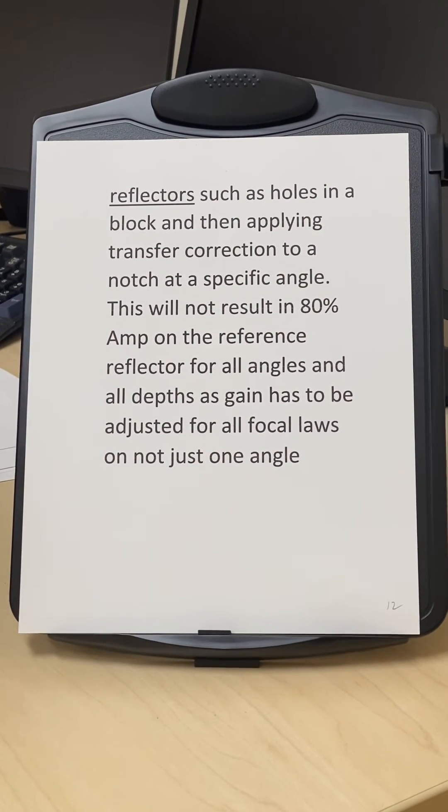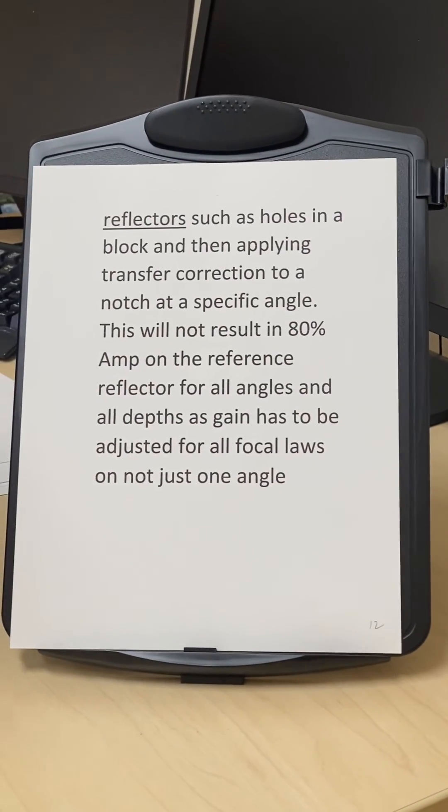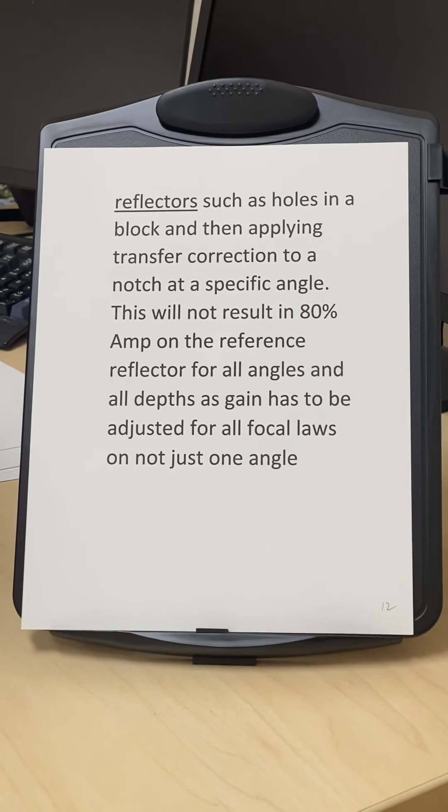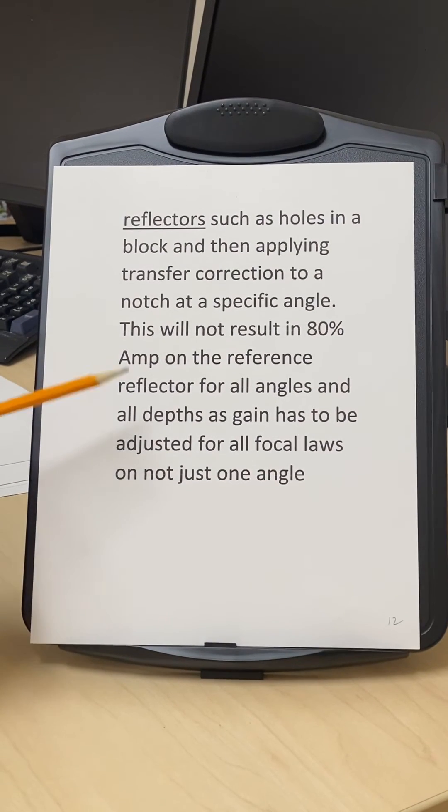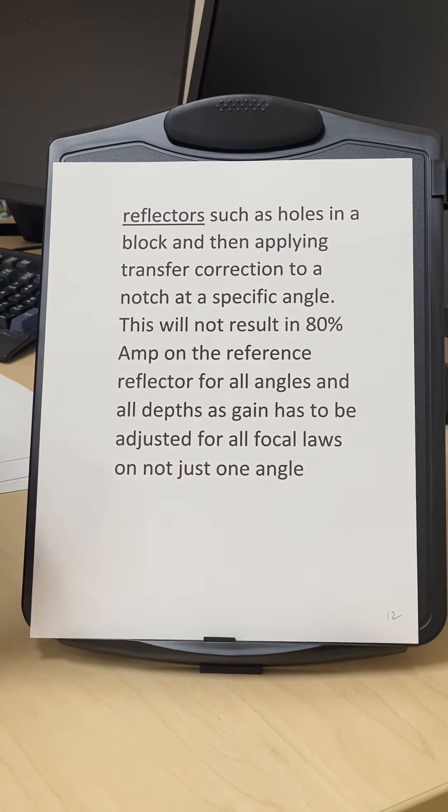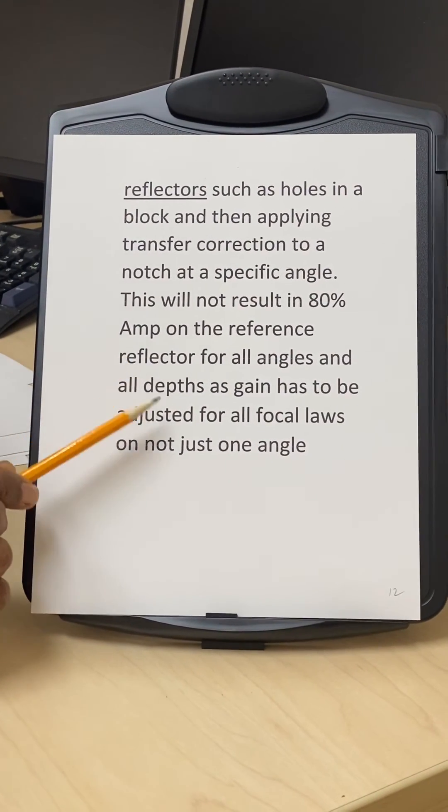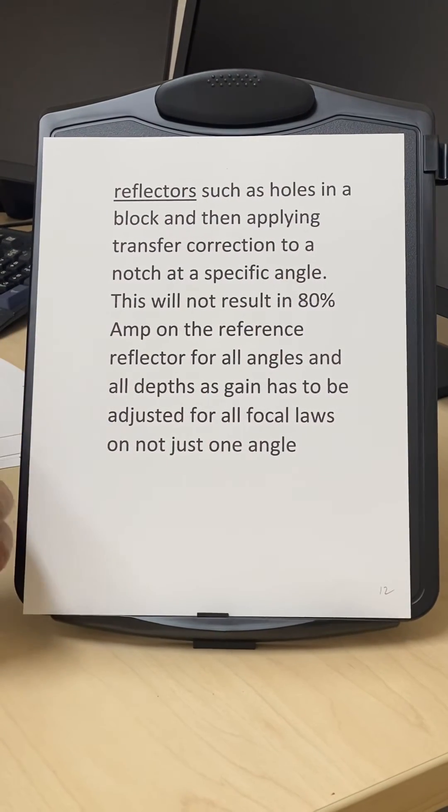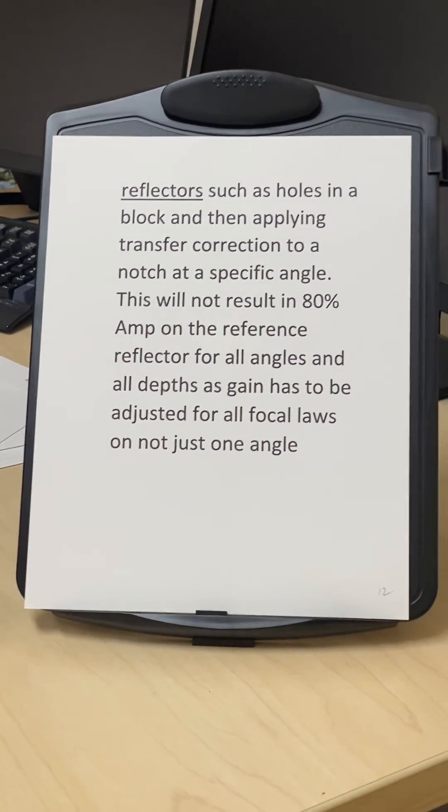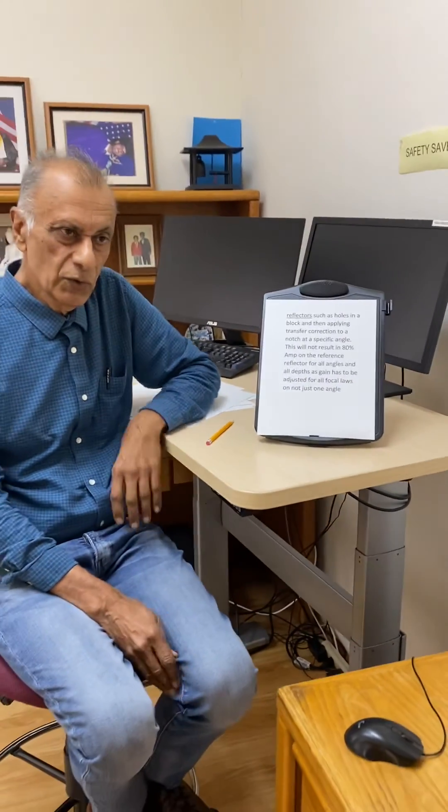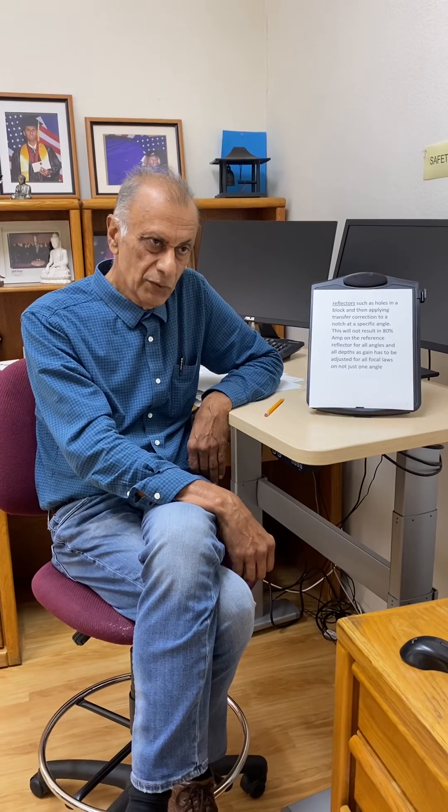TCG should not be created on alternate reflectors to make it easy to get a TCG. Sometimes they will make a TCG on some hole and then apply a transfer correction to a notch and say this is my reference level. When you do that, you are applying the transfer correction only on one specific angle, let's say 50 degrees. At 50 degrees, you will get 80% of the notch, but that doesn't mean you will get 80% on the notch for all the angles and all the depths.